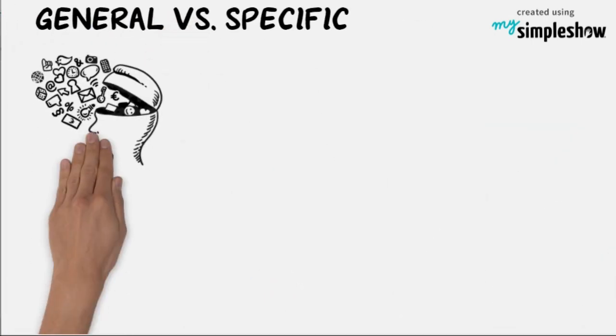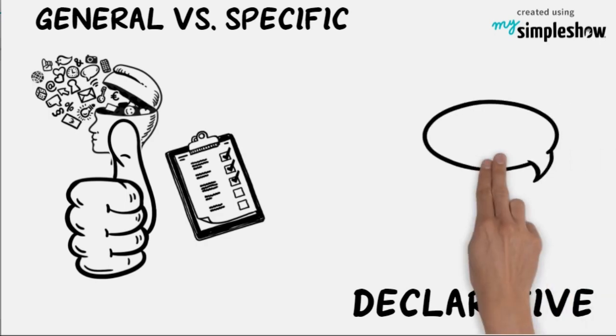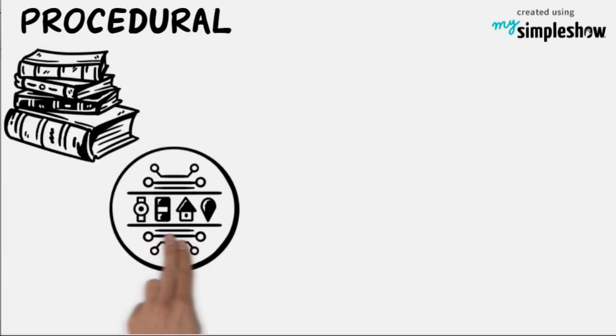General versus specific. This involves whether the knowledge is useful in many tasks or in only one. Declarative refers to factual knowledge. Can be in the form of word or image. Procedural includes knowledge on how to do things.